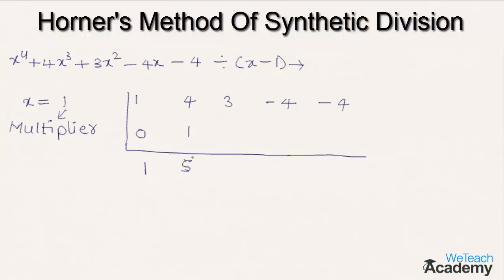Let us multiply 1 with 5. We get the result as 5, and we write this result below the third coefficient of the expression, 3. By adding 3 and 5, we get 8.